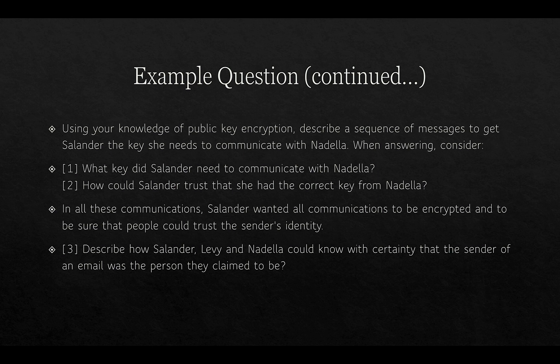The question asks: using your knowledge of public key encryption, describe a sequence of messages to get Salander the key she needs to communicate with Nadella. When answering this, consider: 1. What key did Salander need to communicate with Nadella? 2. How could Salander trust that she had the correct key from Nadella? In all these communications, Salander wanted all communications to be encrypted and to be sure that people could trust the sender's identity.